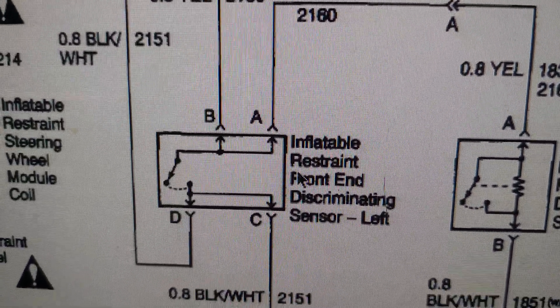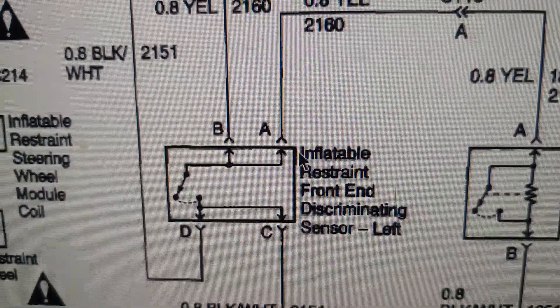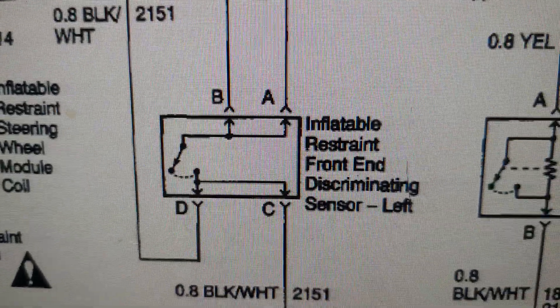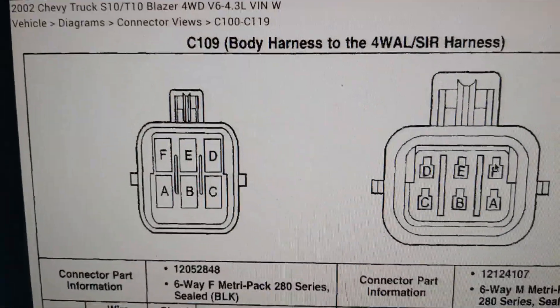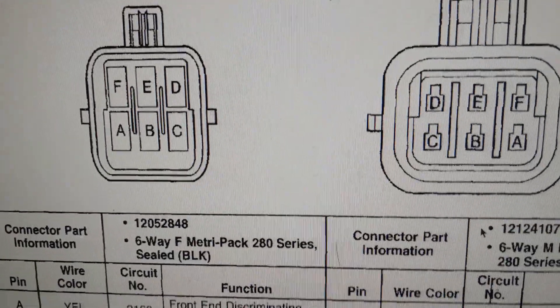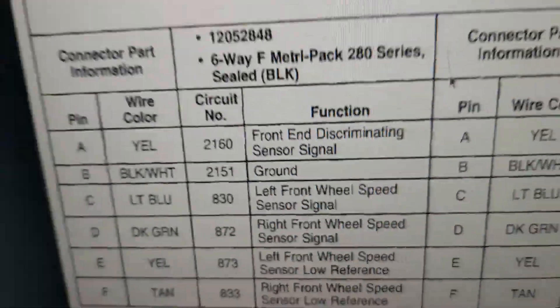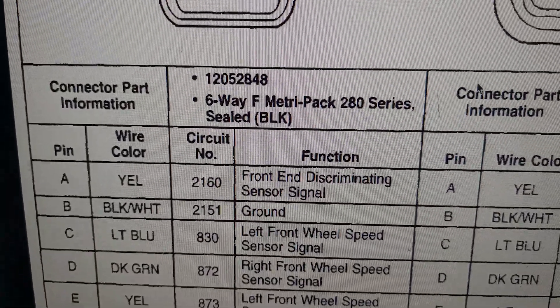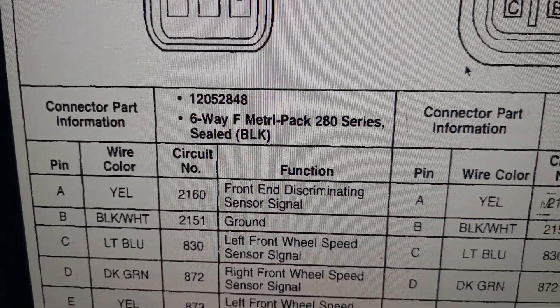The left one is supposed to essentially just bypass this right side unless an impact occurs. Let's pull C109 up here. Pins A and B on this connector are your front-end discrimination sensor, and I'll show you those here on the vehicle.